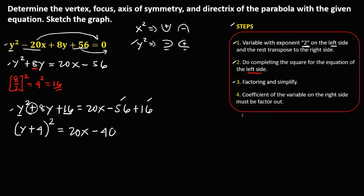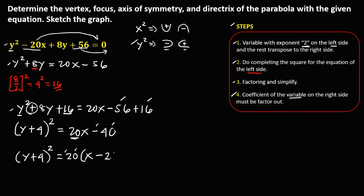The last step is to factor out the coefficient of the variable on the right side. So we have (y + 4)² equals 20 times (x − 2), since negative 40 divided by 20 is negative 2. This is now the standard equation of this parabola.